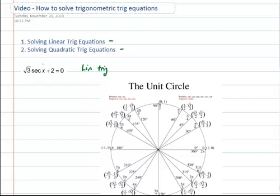What we have to do in this case is we're going to solve for secant. I'll have root 3 secant of x is equal to negative 2, and secant of x is equal to negative 2 over root 3. Now we've got to look for the x values that will make this happen.